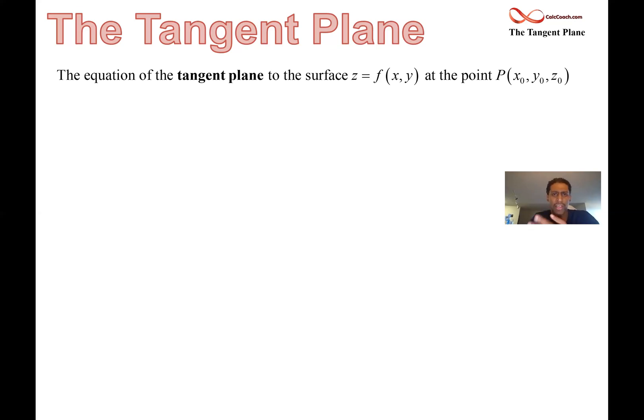I'm going to show you two different approaches. Here's approach number one. It's sort of like a point slope form where you have z minus z naught is your x partial evaluated at x naught y naught times the quantity x minus x naught plus your y partial evaluated at x naught y naught times the quantity of y minus y naught.